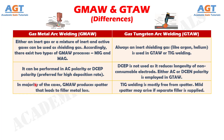Number seven: in the majority of cases, gas metal arc welding produces spatter that leads to filler metal loss. Whereas TIG welding is mostly free from spatter; mild spatter may arise if a separate filler is supplied.